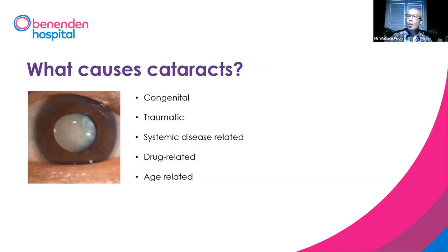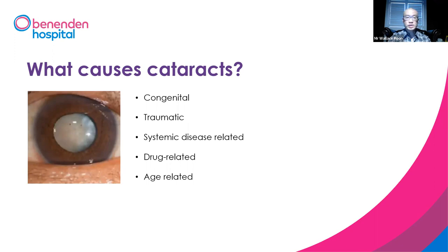So what are the commonest causes of cataract? The most common is actually age-related. However, some patients are born with the congenital type, which the posterior polar cataract is one of them. If you get hit very badly with a blunt trauma, you can also suffer from cataract as a result. It's also related to systemic disease — for example, if you have diabetes. And it can be drug-related as well, with patients taking steroids, either tablets or topical eye drops.